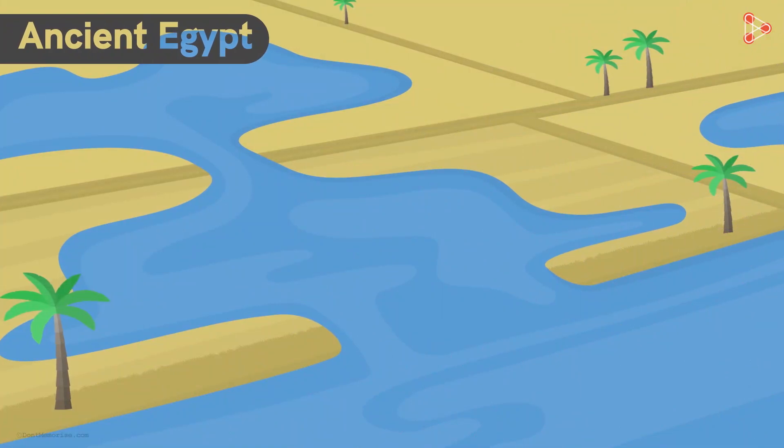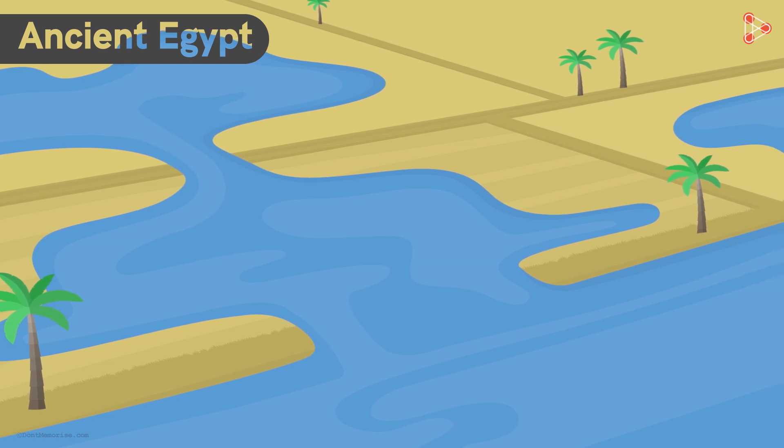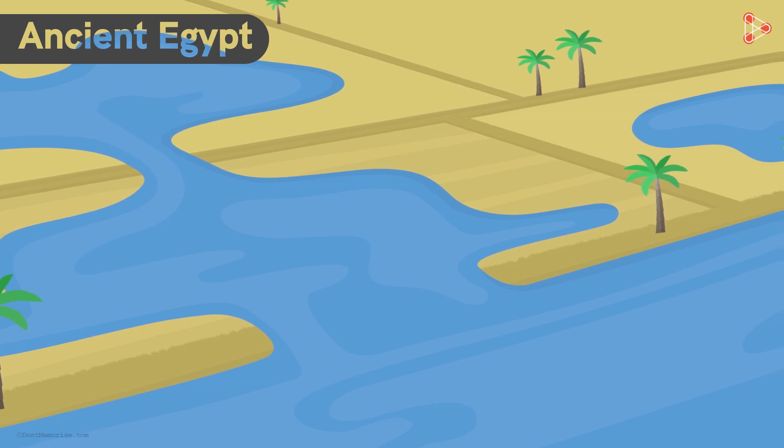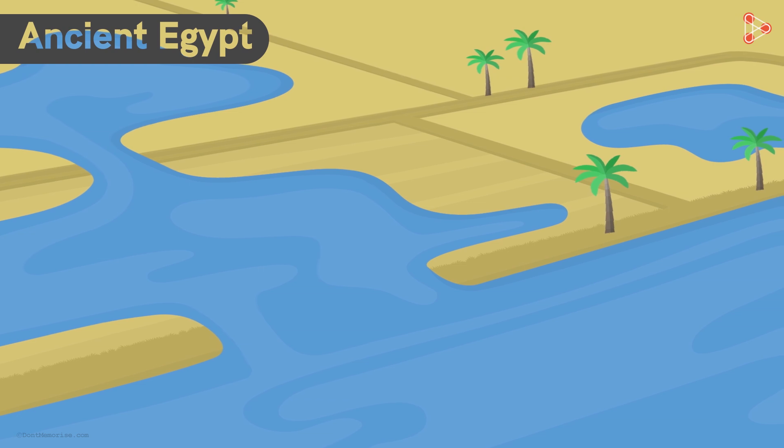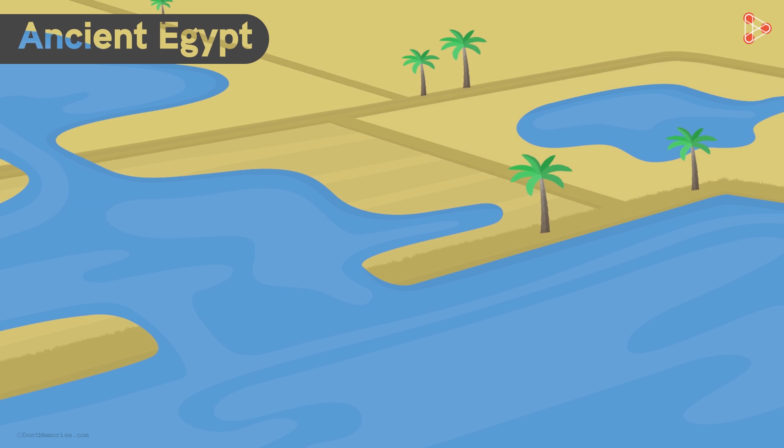Long ago, the people of ancient Egypt faced a problem every year. The problem was that the Nile River used to flood each year. And whenever it flooded, it used to destroy the boundaries of land near the banks of the river. This used to put the land owners in a problem.